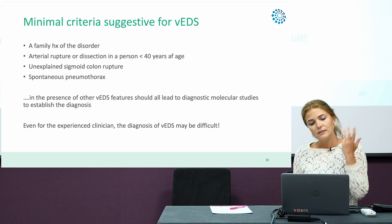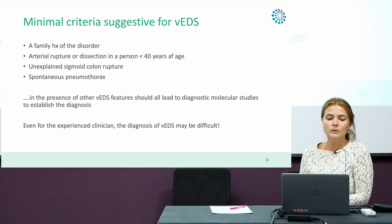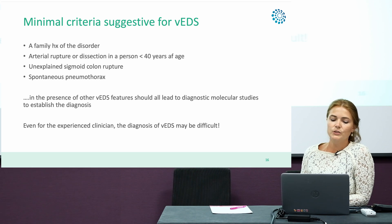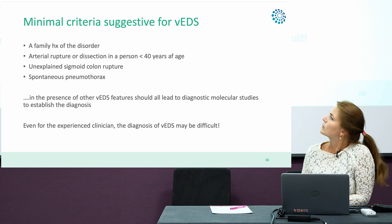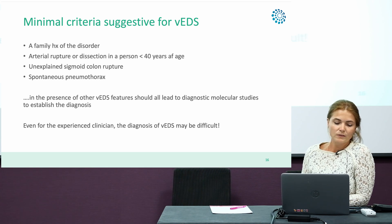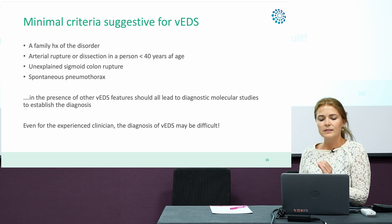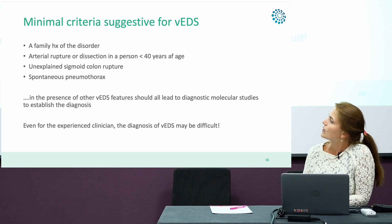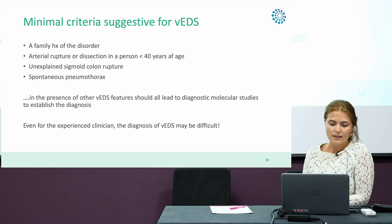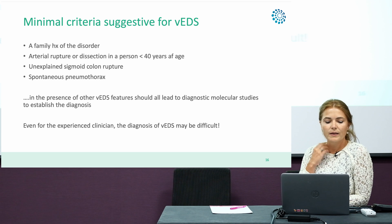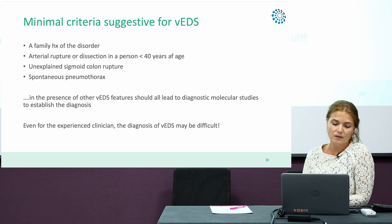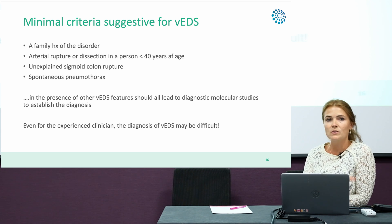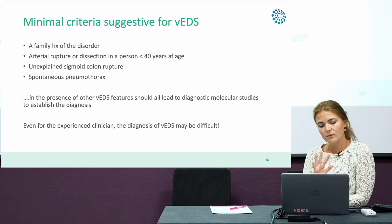The minimal criteria suggested for vascular EDS include a family history of the disorder, arterial rupture or dissection under the age of 40 years, an unexplained sigmoid colon rupture, and spontaneous pneumothorax. When these occur, especially in the presence of other vascular EDS features listed in the minor criteria, molecular diagnostic studies should be initiated. Even for an experienced clinician, the diagnosis of vascular EDS may be difficult in the absence of a major vascular or gastrointestinal complication, as all the minor features can be quite subtle.